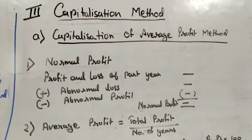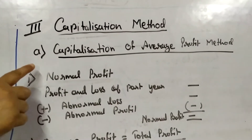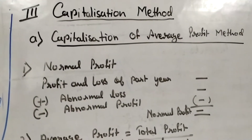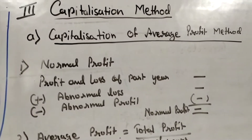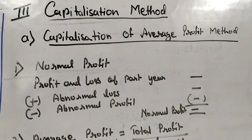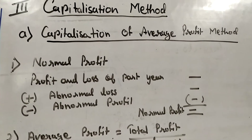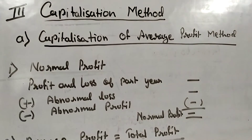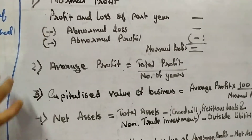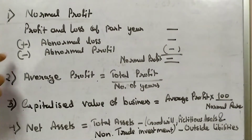The third method for the valuation of goodwill is the Capitalization Method. Under this, you study two methods. The first is the Capitalization of Average Profit Method, under which we study how much capital we require to earn a particular average profit. We calculate goodwill through the following steps. In the first step, we calculate normal profit.